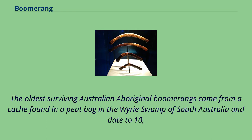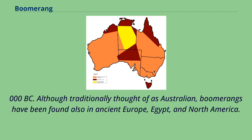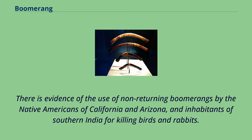The oldest surviving Australian Aboriginal boomerangs come from a cache found in a peat bog in the Wyrie Swamp of South Australia and date to around 10,000 BC. Although traditionally thought of as Australian, boomerangs have been found also in ancient Europe, Egypt, and North America. There is evidence of the use of non-returning boomerangs by the Native Americans of California and Arizona, and inhabitants of southern India, for killing birds and rabbits.